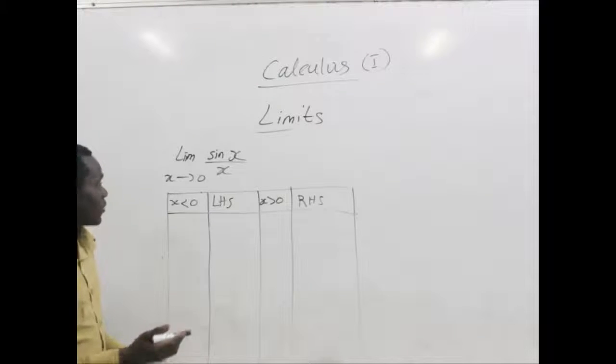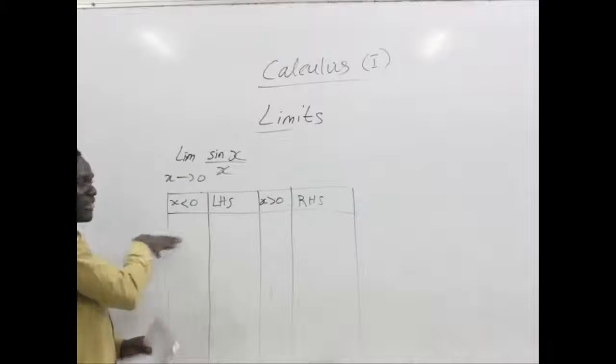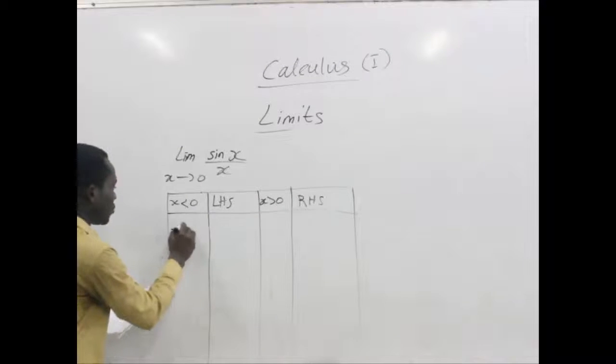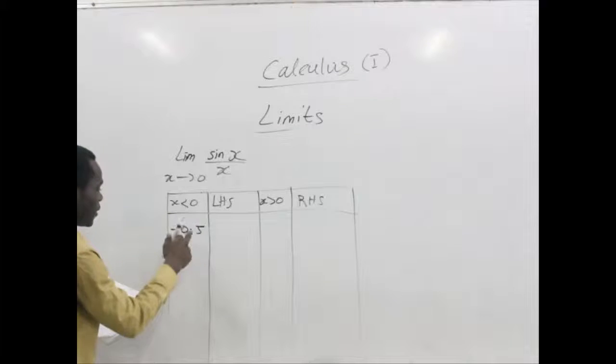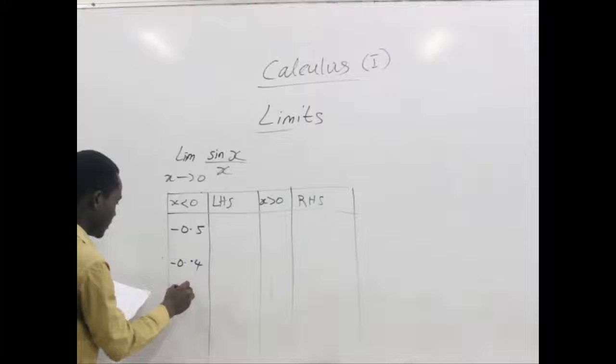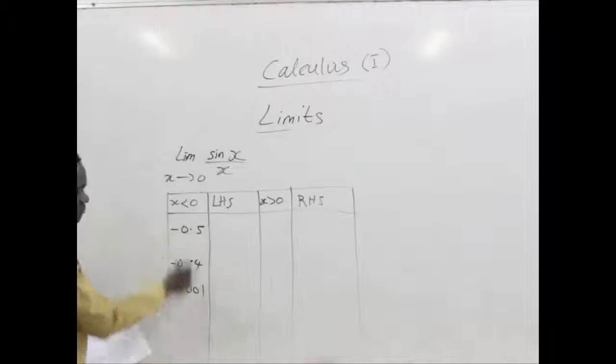Let's take our three values of x which are less than 0, moving from the left hand side but near 0. Let's start from negative 0.5, we also take negative 0.4, and negative 0.001. Let's try to find out what their values will be, and after that we find other values which are greater, nearer to 0, and find out their limits.